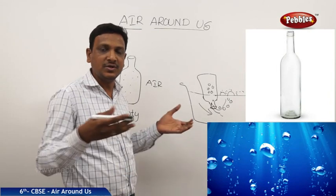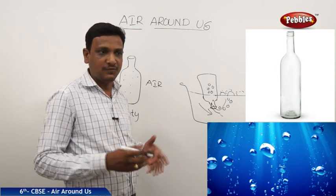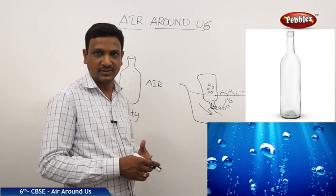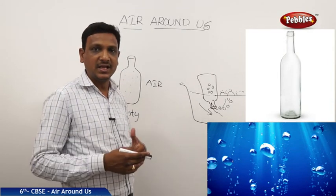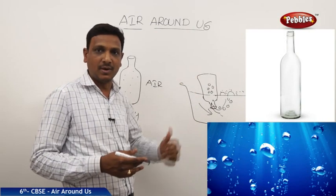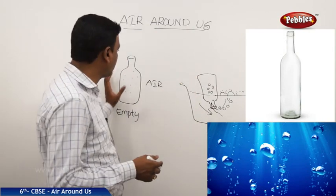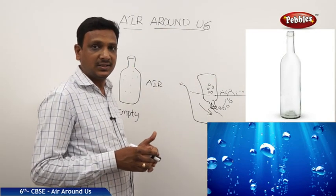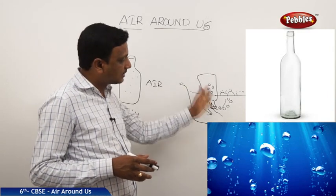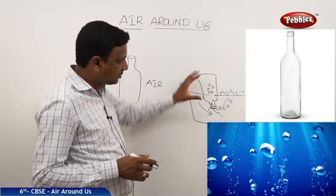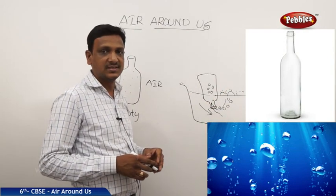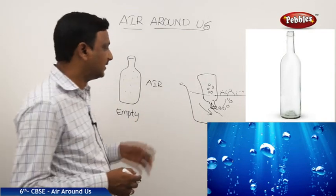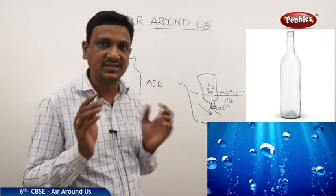Say for example you are entering a cinema theater. If you want to enter, the people inside from the before show must come out. Likewise, inside the bottle something is there — if you want to put something new, the whole thing must come out. So the bottle is not empty; it has got air. Unless the air comes out, the water cannot go in. As you tilt, the air comes out in the form of bubbles, then the water enters. The bubbles indicate the presence of air.